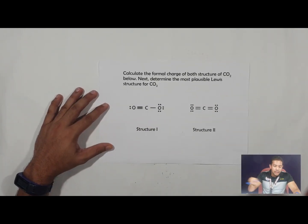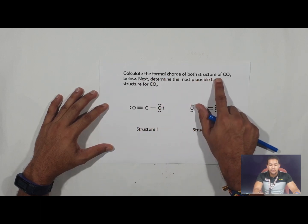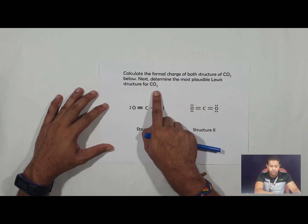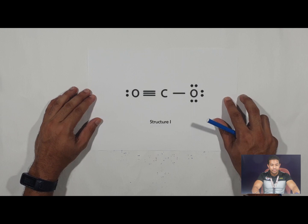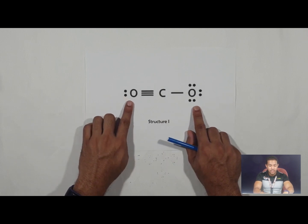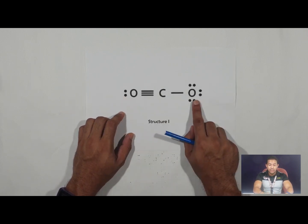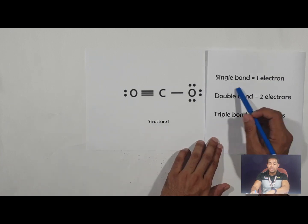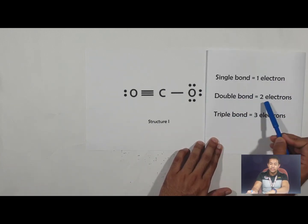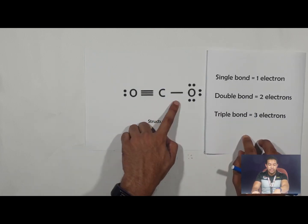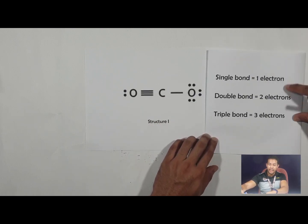The first example: calculate the formal charge of both structures of CO2, then determine the most plausible Lewis structure. Let's focus on structure one. As you can see, carbon is the central atom, with one oxygen connected by a triple bond and one oxygen connected by a single bond. Since this molecule has a triple bond and a single bond, we only look at these two bond types.